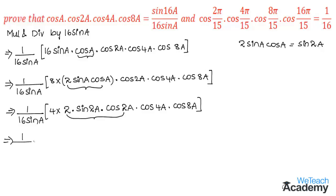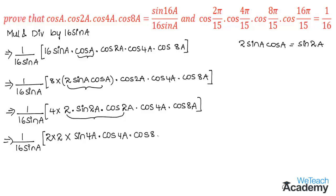Here we get 1/(16 sin a) · 2 · 2 · sin 4a · cos 4a · cos 8a. That is, 2 sin 2a · cos 2a gives sin(2·2a) = sin 4a. Again, we can use the formula of sin 2a as we have 2 · sin 4a · cos 4a, giving sin 8a.